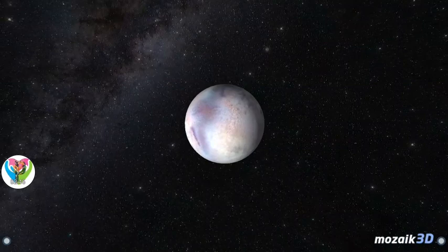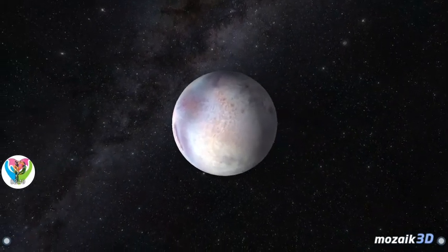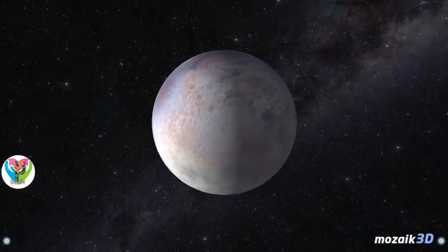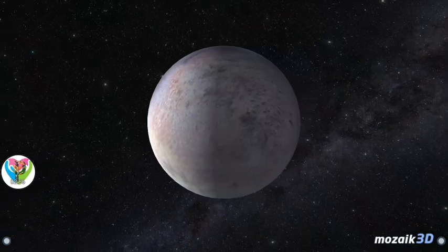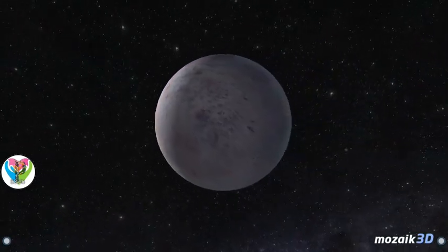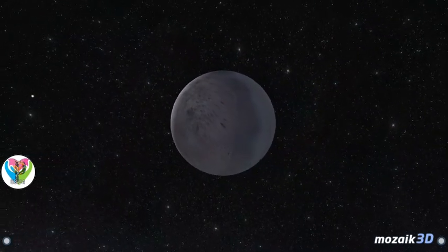The largest moon is Triton, with a diameter of 2,706 kilometers. It has a nearly circular retrograde orbit with an orbital period of six days. Its surface features dark bands with geysers. It was discovered in 1846, together with Neptune.